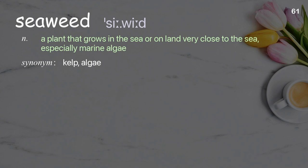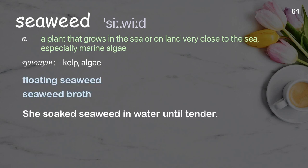Seaweed. A plant that grows in the sea or on land very close to the sea, especially marine algae. Examples: floating seaweed, seaweed broth. Sentence: She soaked seaweed in water until tender.